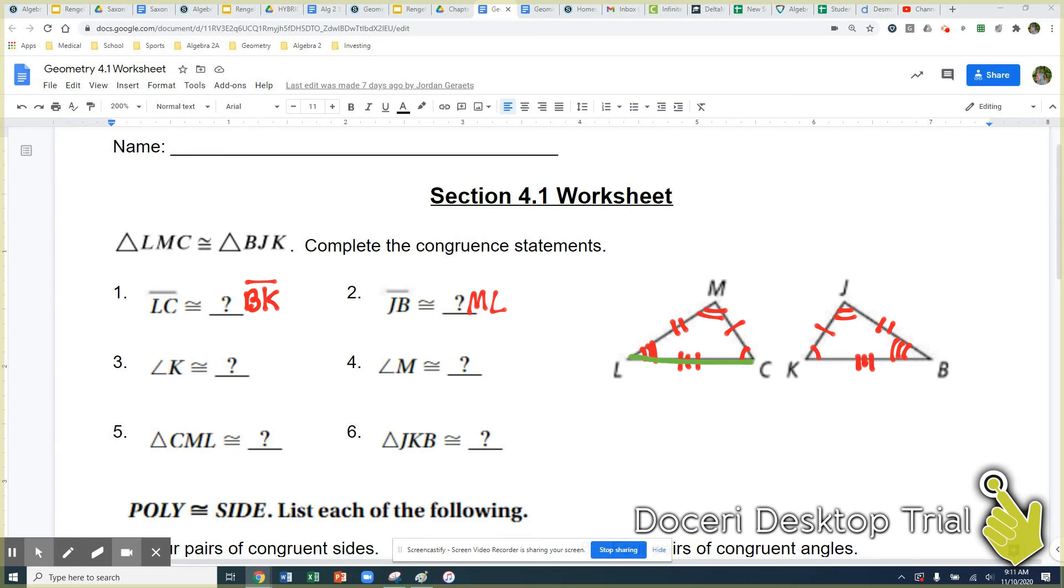How about JB? Here it is. JB and ML. So there's going to be your congruent statement. Now you go to K. You look at the congruent statement. Where does K match up with? So K is the last letter. Where does K match up with on the first? C. How about angle M? Angle M is the middle. What does that match up with? J.